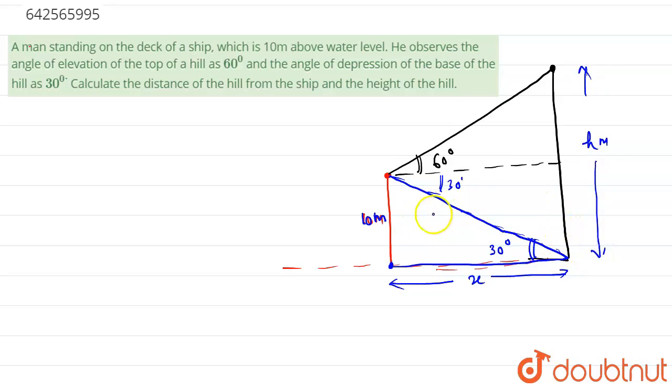So first applying tan 30 degrees in this triangle. Tan 30 degrees is equal to perpendicular, that is 10, upon base, that is x. So we will have 1 by root 3 is equal to 10 upon x, so x is equal to 10 root 3 meters.